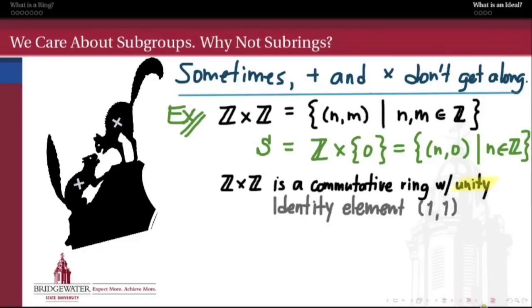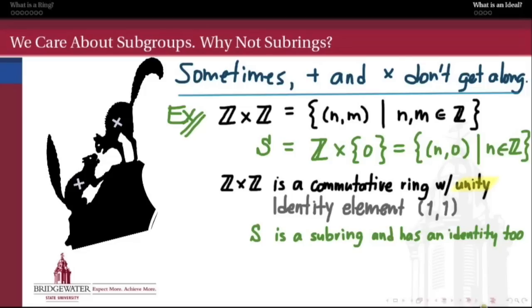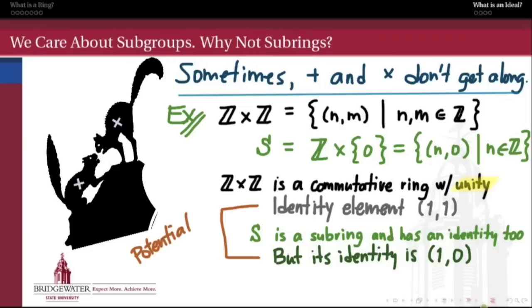Z×Z is a commutative ring with unity; its multiplicative identity is (1,1). Meanwhile the sub-ring S actually is a sub-ring — it's a subset which is itself a ring under the same operations, and it's also commutative. It also has a multiplicative identity element, but the multiplicative identity in S is (1,0), not (1,1). So some weird things can happen with a sub-ring because we might get properties that don't line up with the properties of the bigger ring. There's some potential weirdness here.